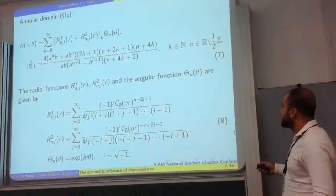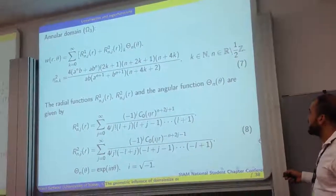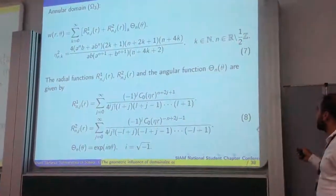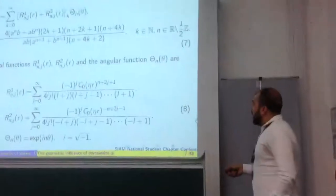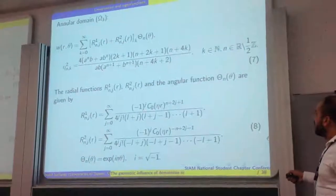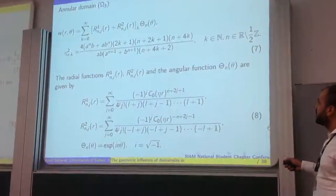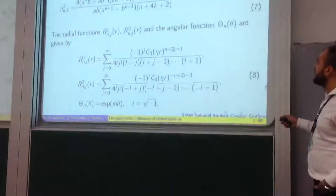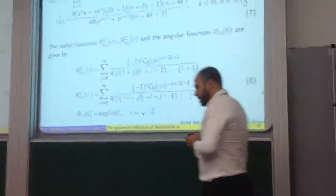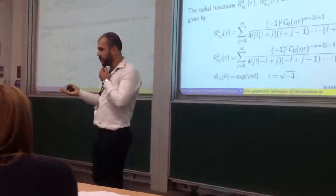We see that A is the inner radius of an annular region, B is the outer radius, and N is, again, the associated order of Bessel's equation, which for this piece we choose from this set. R1 and R2 are given to be these Bessel series. You might be wondering why there is a summation over K with J's appearing here — this is basically when we go through an argument from real analysis called the telescoping argument, which the previous speaker also mentioned.